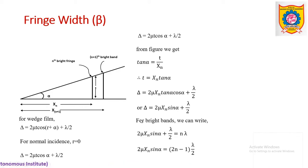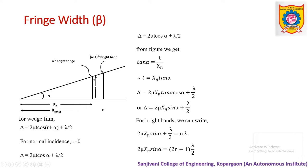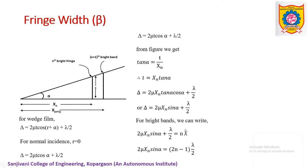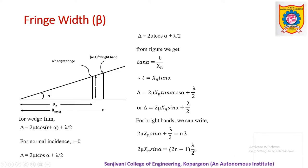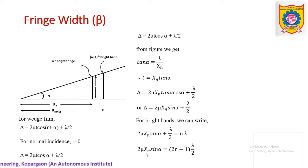For the nth bright fringe, the path difference equals n·λ. So we equate: 2μ·x_n·sin(α) + λ/2 = n·λ. Shifting λ/2 to the RHS and rearranging gives the equation in terms of x_n. This fulfills the first requirement.